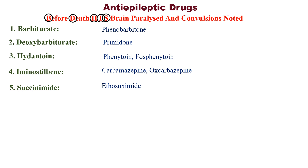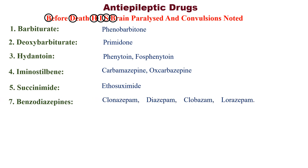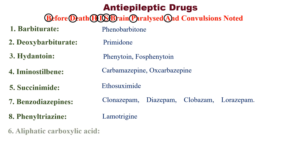'S' stands for succinimide — example: ethosuximide (note it ends in M-I-D-E). 'B' stands for benzodiazepine — example: clonazepam. The next letter stands for phenyltriazine — example: lamotrigine.